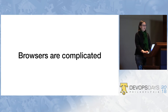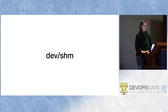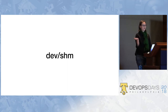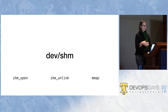Browsers are complicated; Chrome has a bunch of moving parts and not all of them are friendly to the limited environment of a Lambda. First: /dev/shm — I have no idea how to pronounce that. It's a file system backed by RAM, which is great if you have code that thinks it needs to write stuff to files but they're really ephemeral. It's also used for shared memory functions — POSIX expects you to use /dev/shm to work with shared memory functions like shm_open, shm_unlink, and memory map.